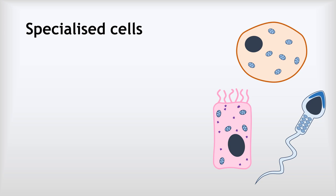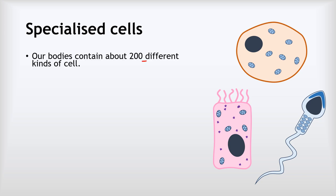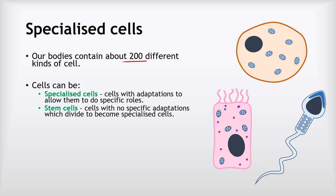Now, specialised cells. Our bodies contain about 200 different kinds of cell. Fortunately, you do not need to know all 200, but we are going to meet quite a few of them. Broadly speaking, cells can be considered specialised cells — ones with adaptations to allow them to do specific roles in the body. An adaptation is a feature or part of the cell that is designed to do a particular role.